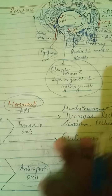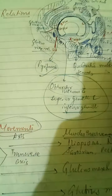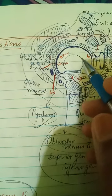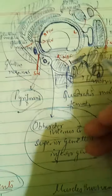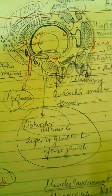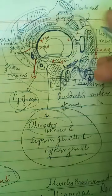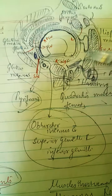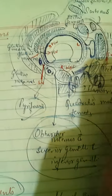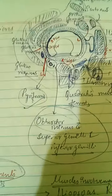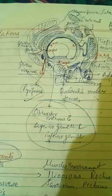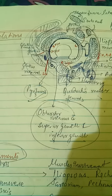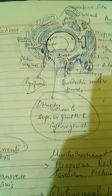One important clinical anatomy point: posterior dislocation of the hip joint is the most common type of hip joint dislocation. This has been discussed in detail in the lecture videos.